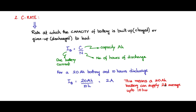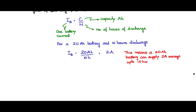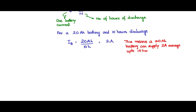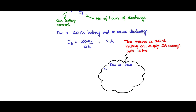However, in practice it is not so. Due to losses, a 20 ampere-hour battery, if you are discharging at a 2 amp average current rate, it would consume much more than 20 ampere-hours in 10 hours — or equivalently, the 20 ampere-hours is consumed in much less than 10 hours. So in practice, a 20 ampere-hour battery can supply 2 amp average current for less than 10 hours.